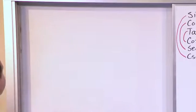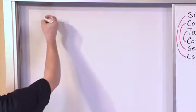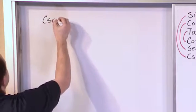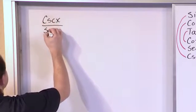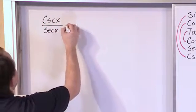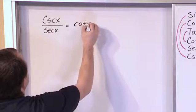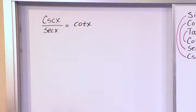For the first problem, what we have is cosecant of x over secant of x is equal to cotangent x. Now, there's a couple things I want to say before we solve this problem.